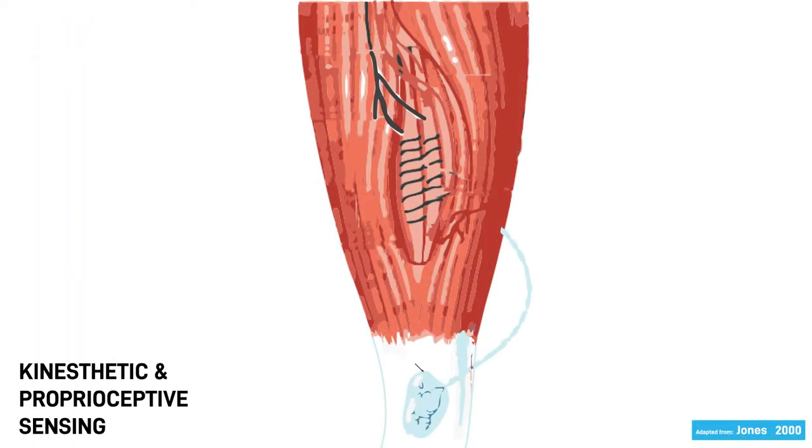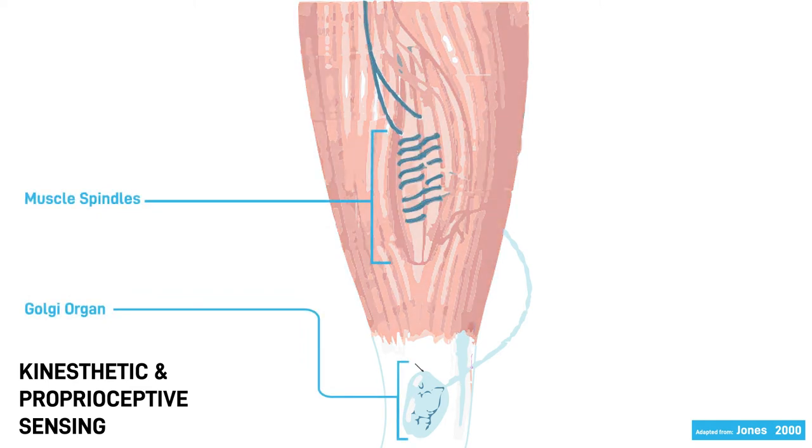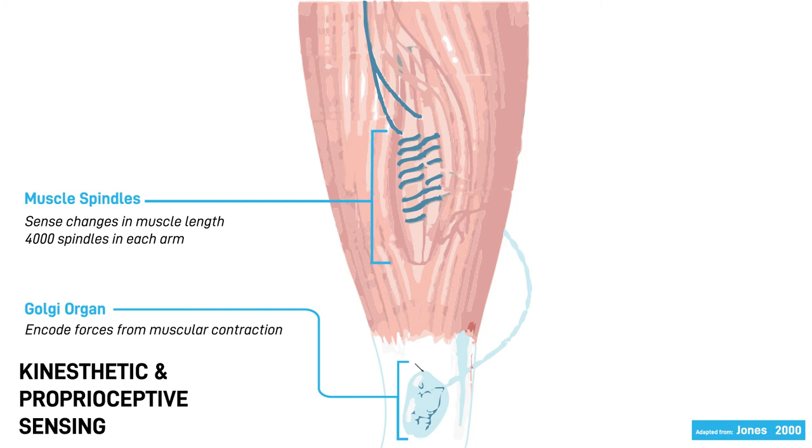Proprioceptive or kinesthetic touch is mainly mediated by receptors embedded in the muscles and joints, specifically the muscle spindles and the Golgi organs. Muscle spindles typically sense changes in muscle length. There are 4,000 of them in each arm contributing to mapping the changes in the positioning of our limbs. Golgi tendon organs encode forces that are induced by muscular contraction.